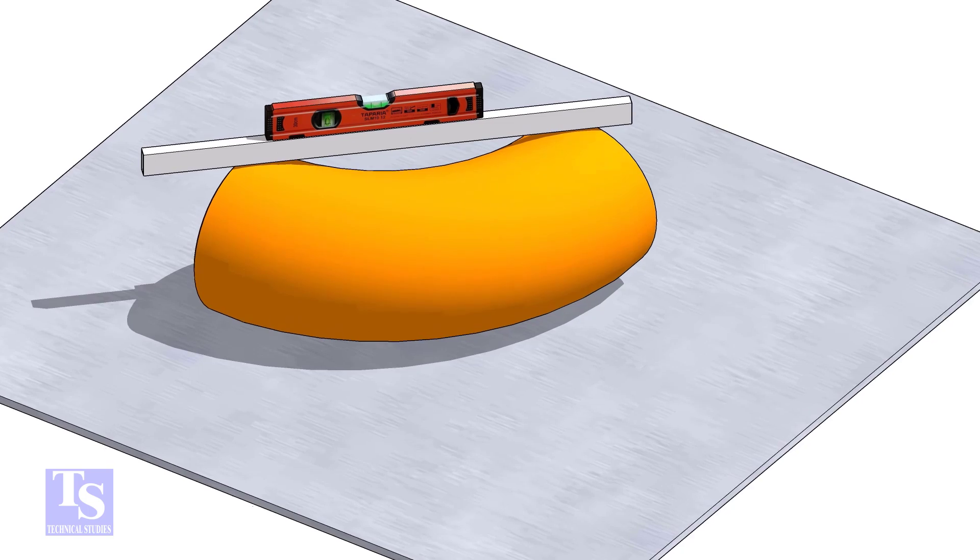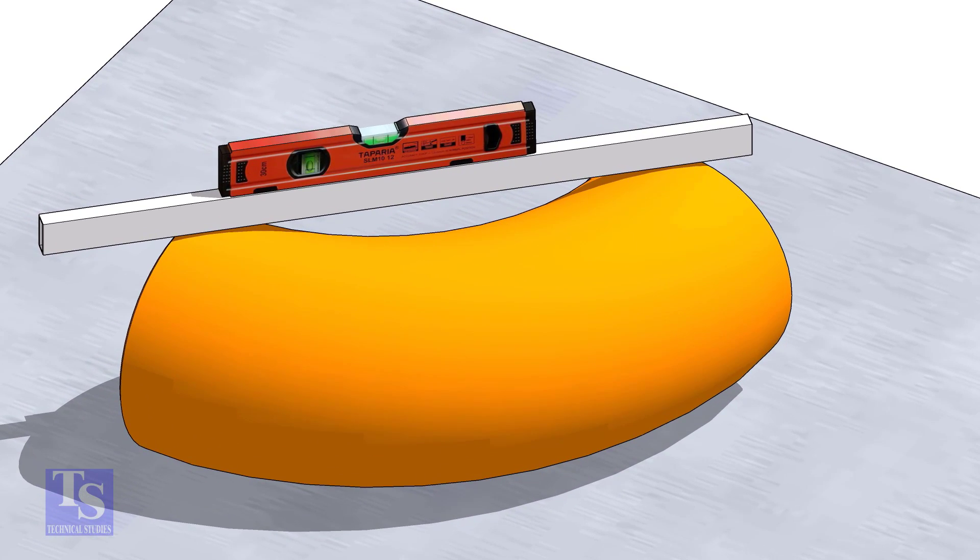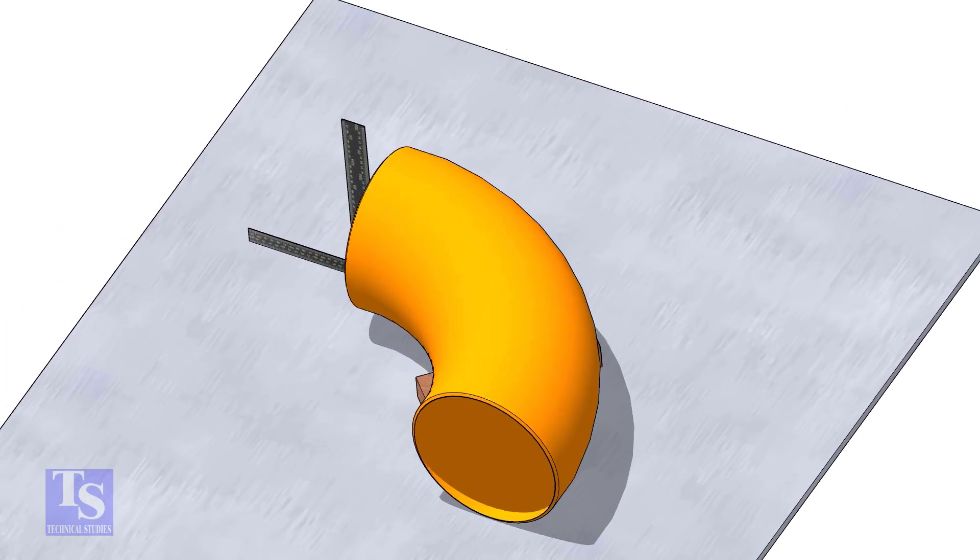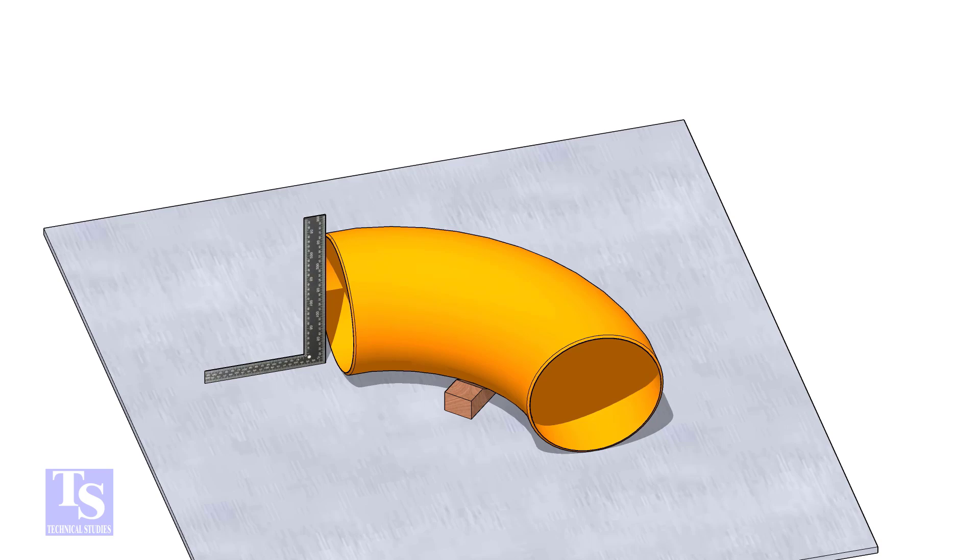Check the level of the elbow. Check the squareness of the face of the elbow with the plate. If necessary, put some packing below as shown.